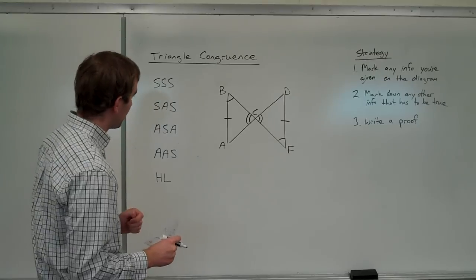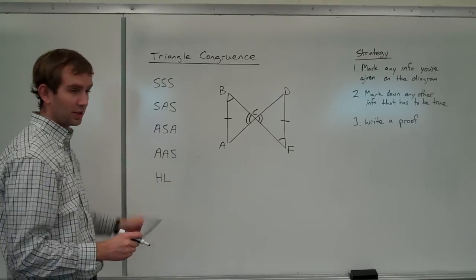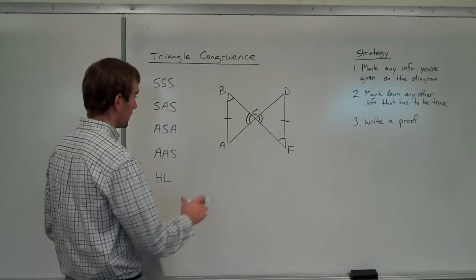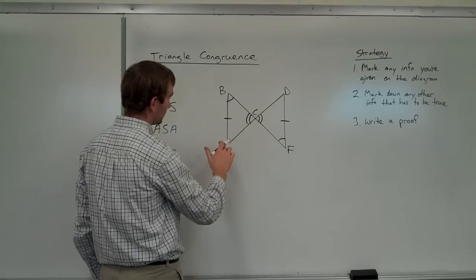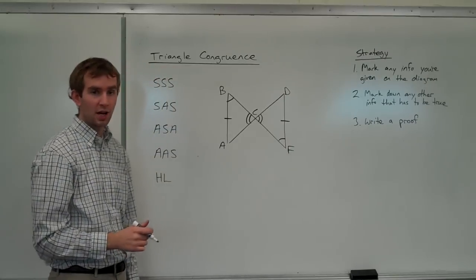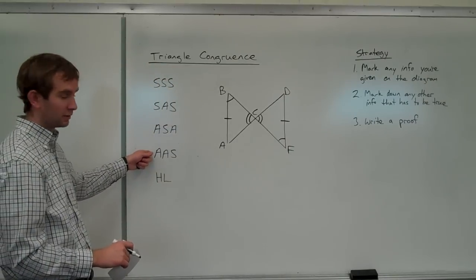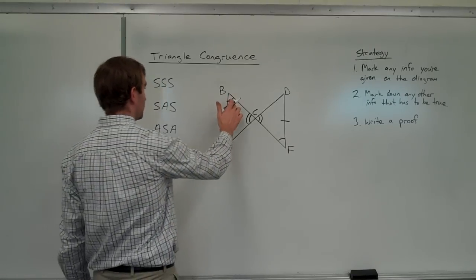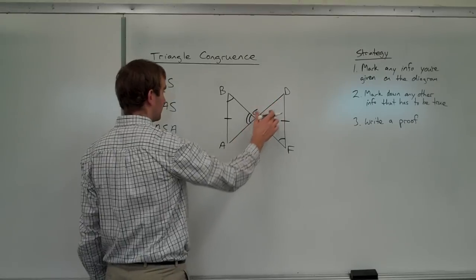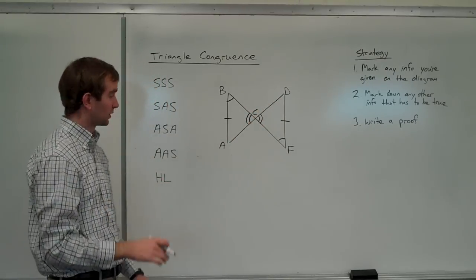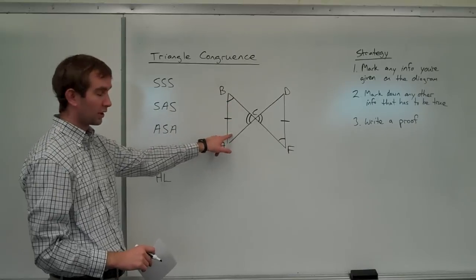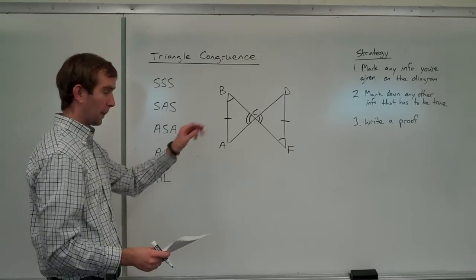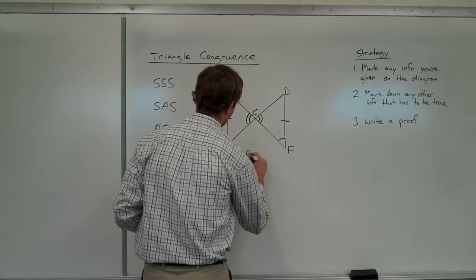Now you've got three things marked down, which is what a lot of these problems require — at least three things. Is that enough to prove those two triangles are congruent? Well, what do we have? We have angle, angle, side — AAS. Yeah, that's enough. You could take it a step further and say that because two angles are defined, the third angle also has to be congruent by the third angles theorem, since all three angles of a triangle must add up to 180. But that's not necessary in this case. We've got angle, angle, side.